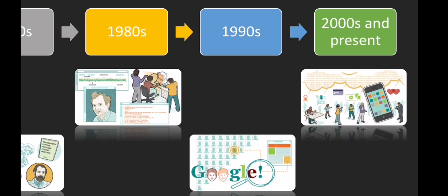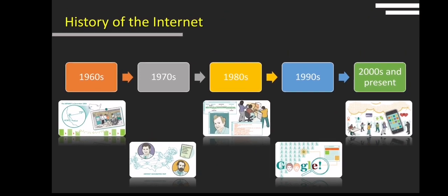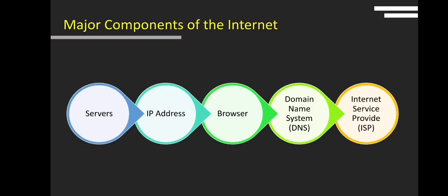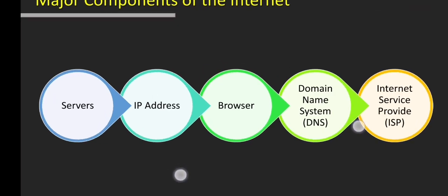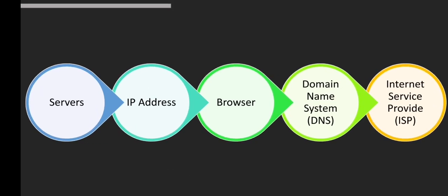We now look at the different components of the Internet. There are five major components. The first is servers. A server is a computer that makes data available to other computers. There are numerous types of servers, including web servers, mail servers, and file servers. Each type runs software specific to the server's purpose.